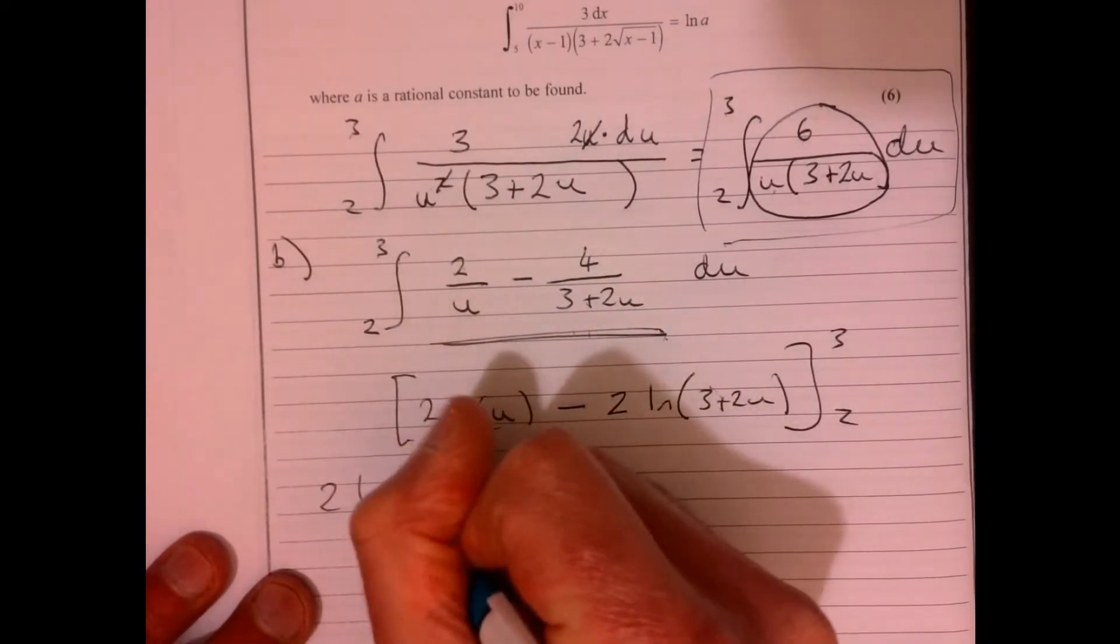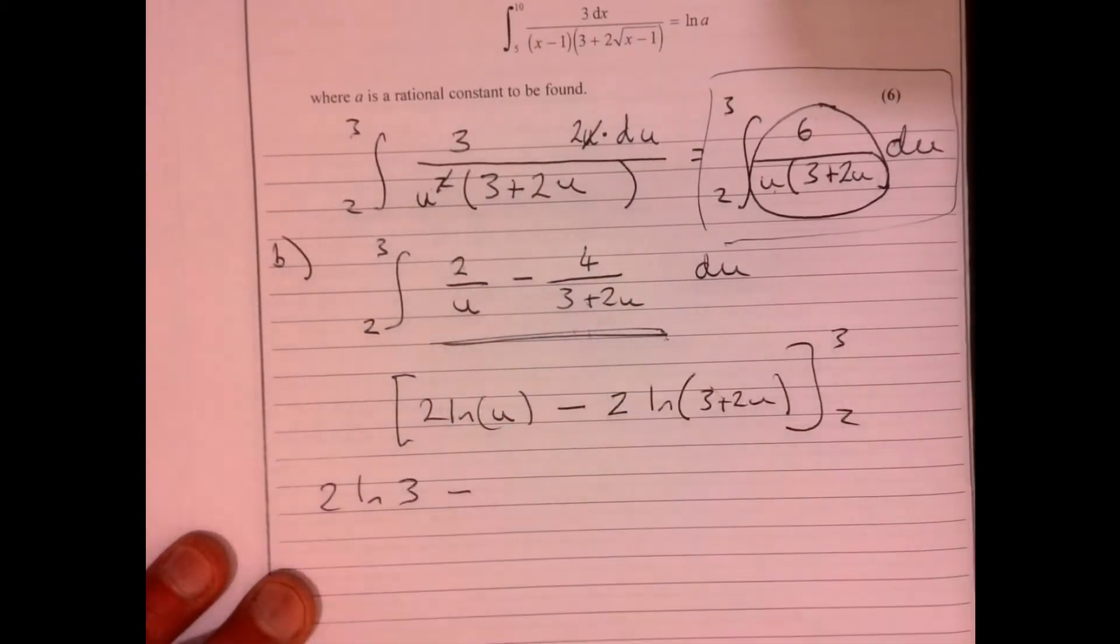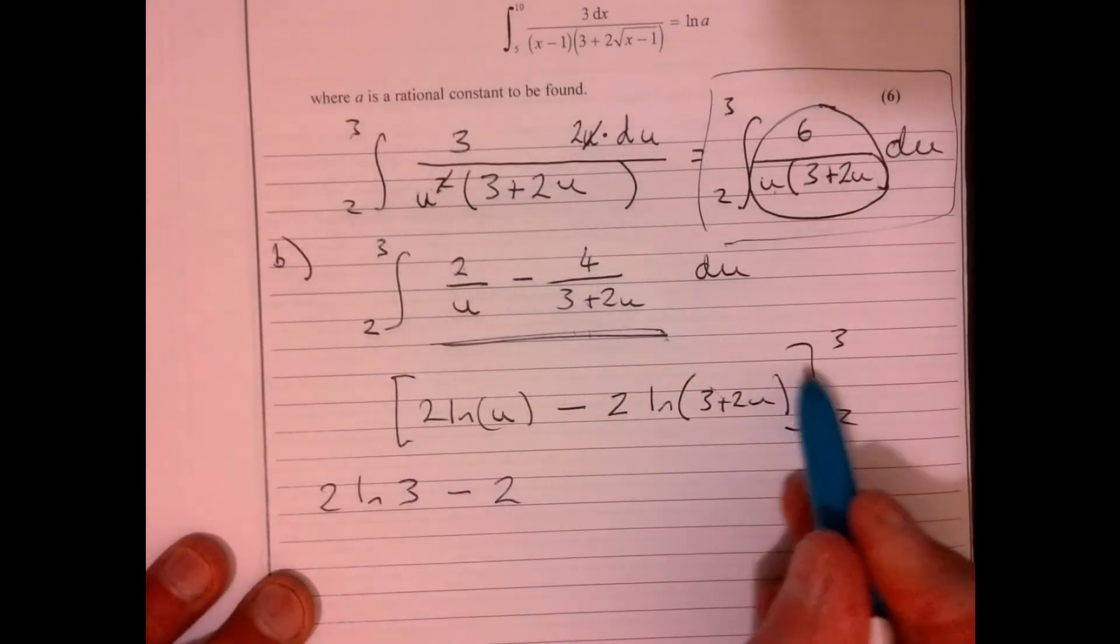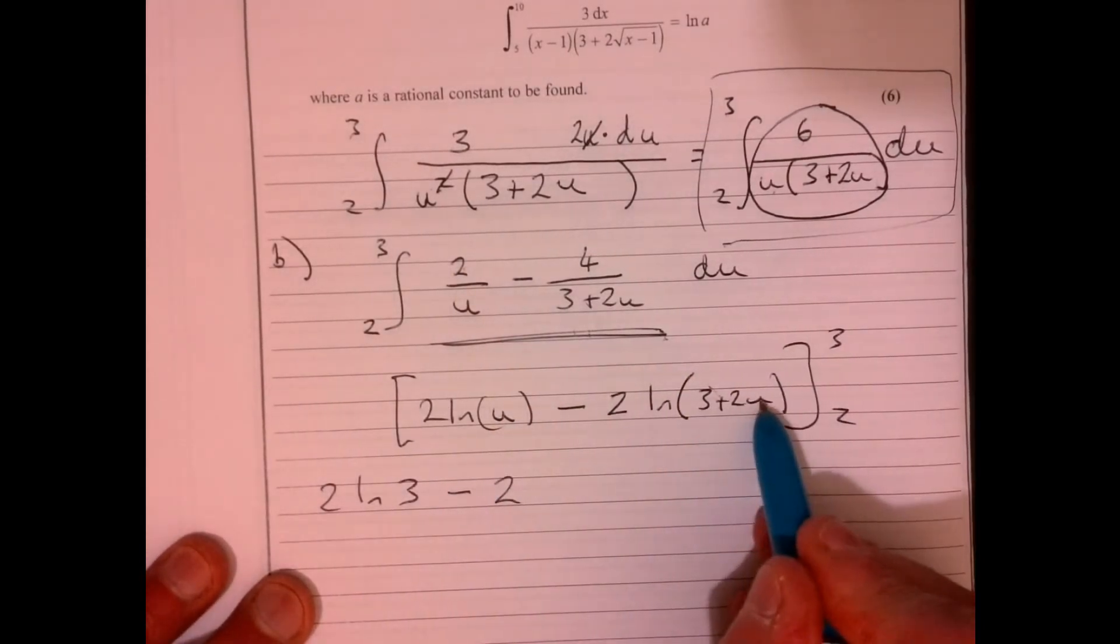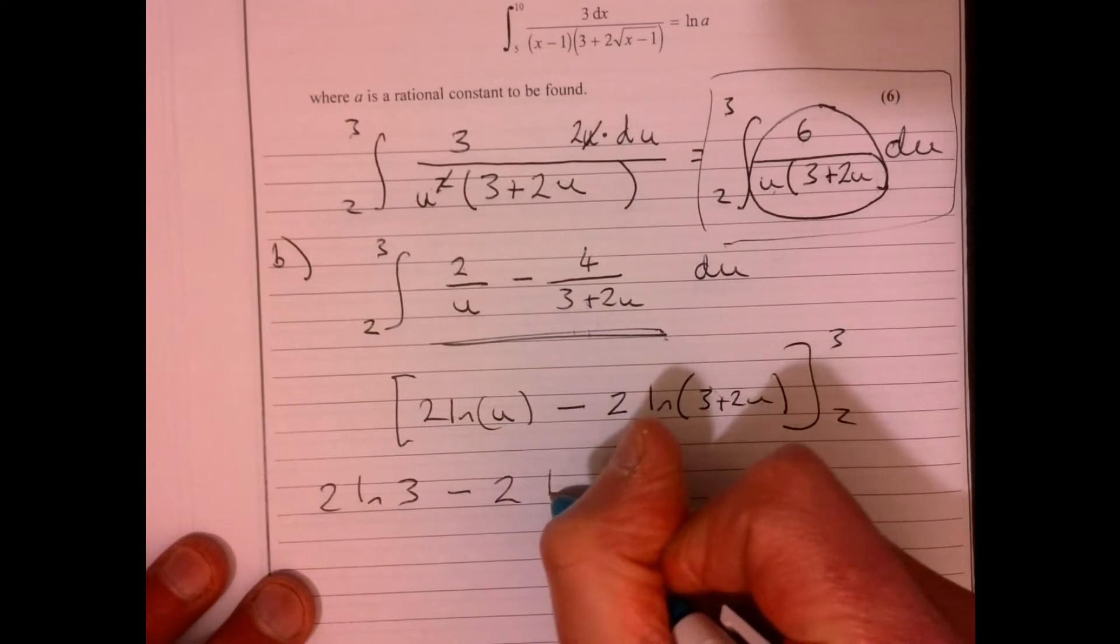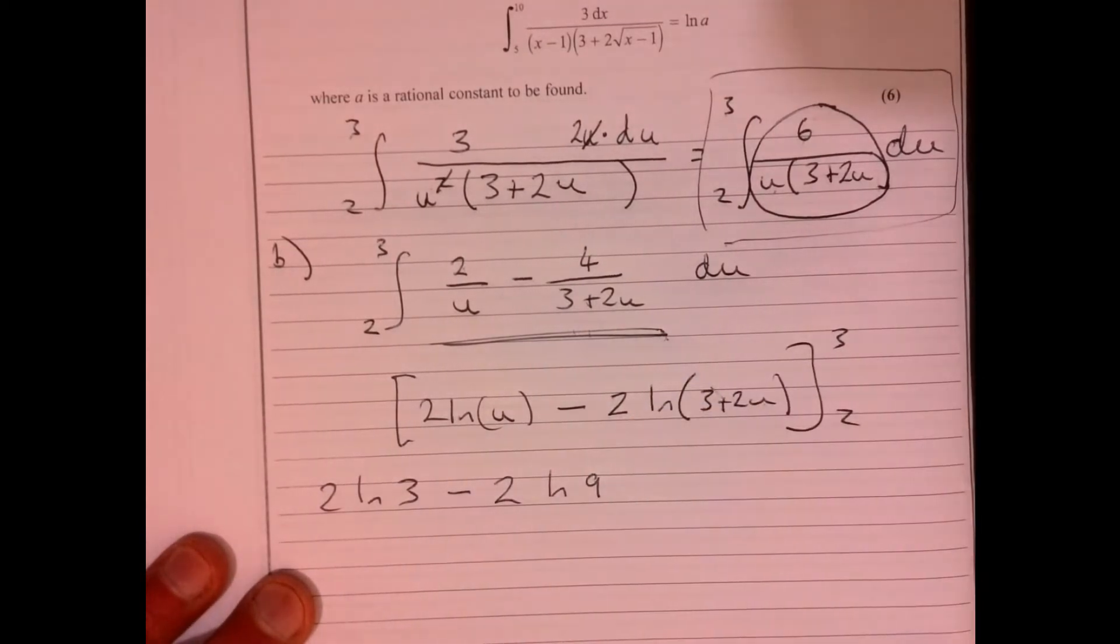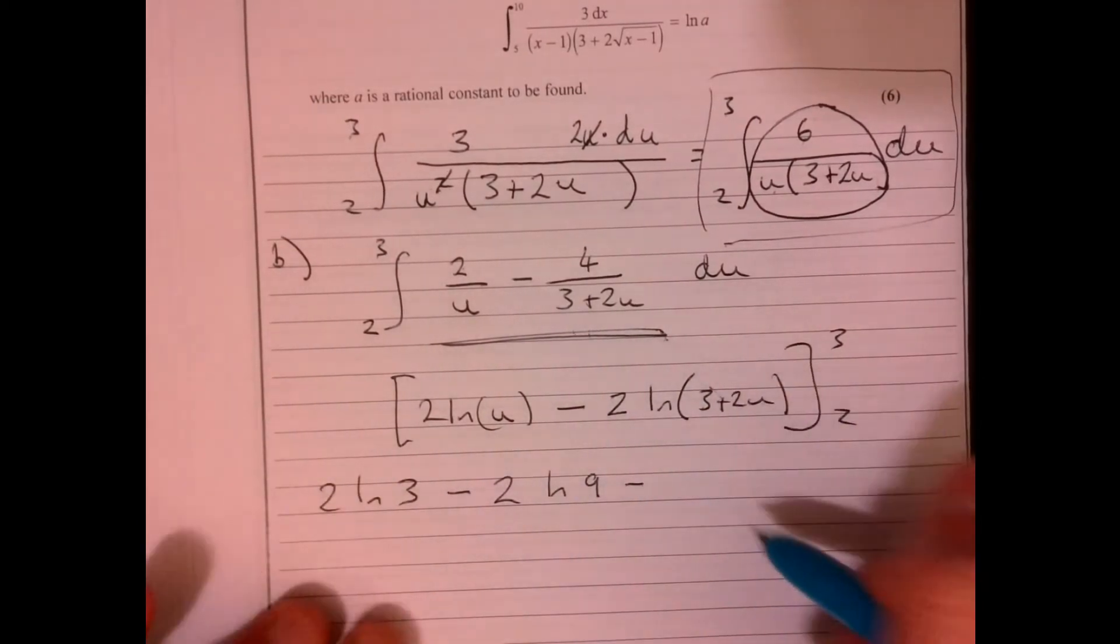So two ln three. I'm just substituting in. Take away two. Now, if I substitute three into here, so that's six plus three, that's going to be nine. So ln nine.